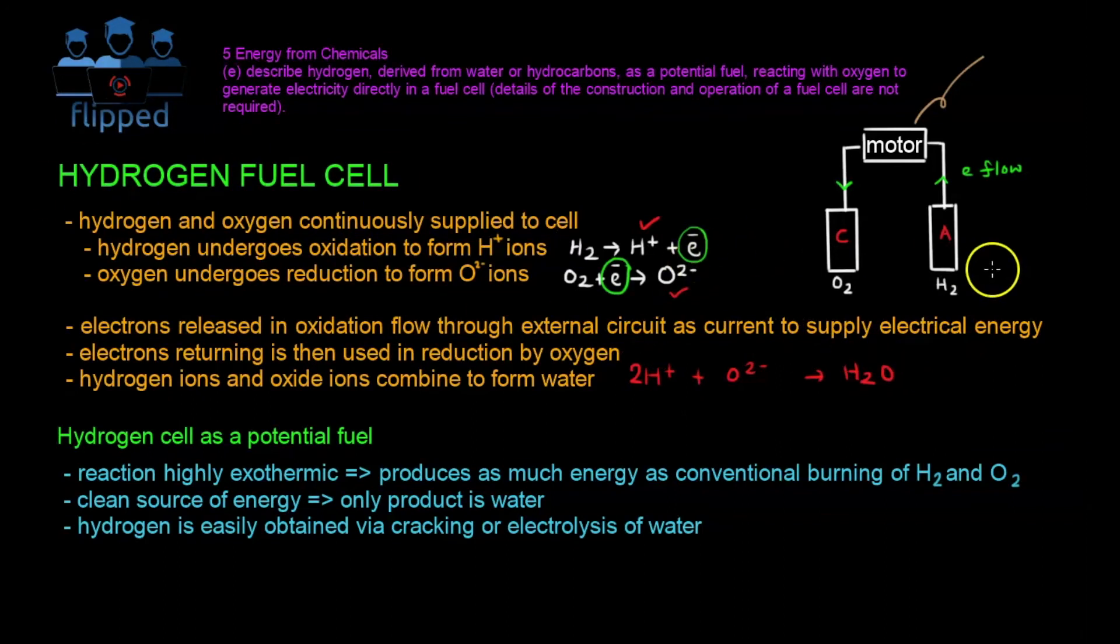So let me just recap how this whole thing works again. Hydrogen undergoes oxidation to form H plus and electron, which flows up here to the motor and does its own thing, which you don't have to know. You just have to know that electrons flow through here to run the motor. And then the electrons have to come back down. It cannot just stay there forever. It has to come back down, and it will be used up by the oxygen to form oxide ions. And now we know that we have the final products of the half equation, H plus and O2 minus, which will then combine to form water, which is the final product, and it's very clean. And that's why hydrogen cell has its own potential as a fuel, to be used as a fuel to replace our usual gas to run our cars, gas and oil to run our cars.